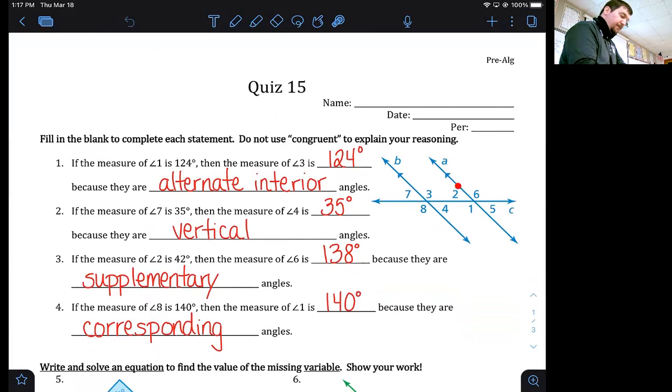Number three, if the measure of angle two is 42 degrees then angle six would be what? Well, angle six is obtuse, they're not even close to being the same size. So if it's not corresponding, alternate interior, alternate exterior, or vertical, it must be supplementary because they will add to 180. They sit on that straight line together.